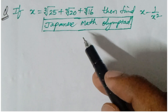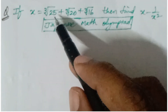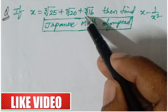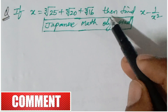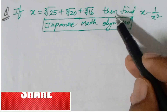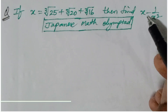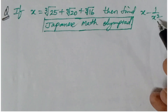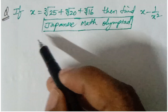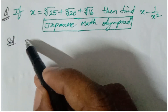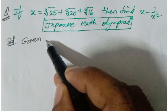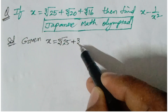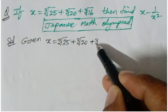The question is given here: x is equal to cube root of 25 plus cube root of 20 plus cube root of 16. We are going to find the difference between x and 1 over x squared. Let us go ahead and take a look at these three numbers.